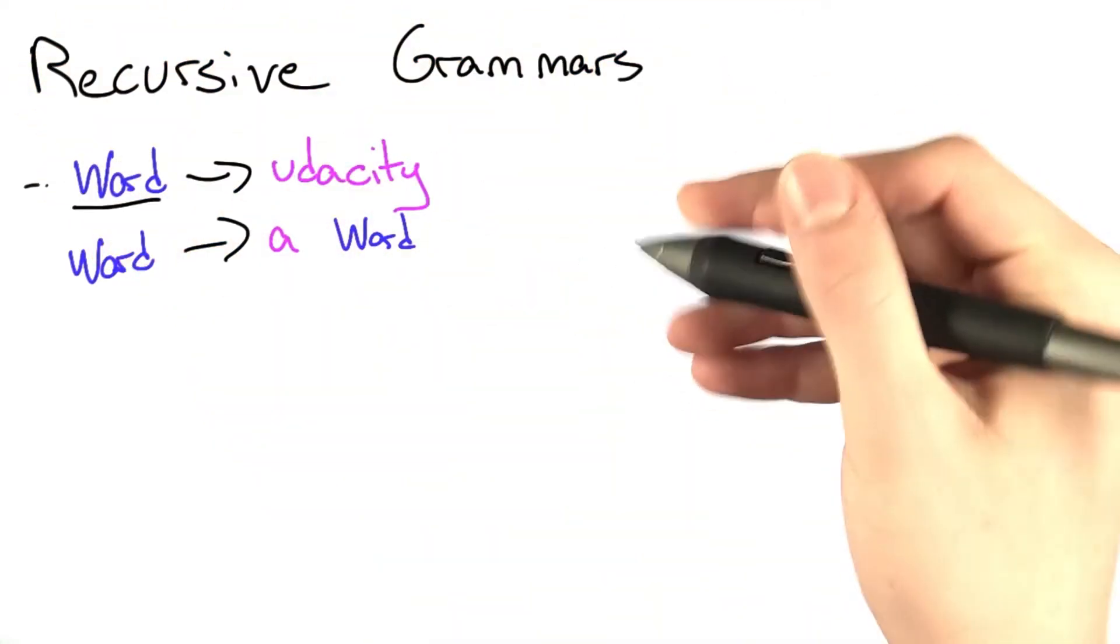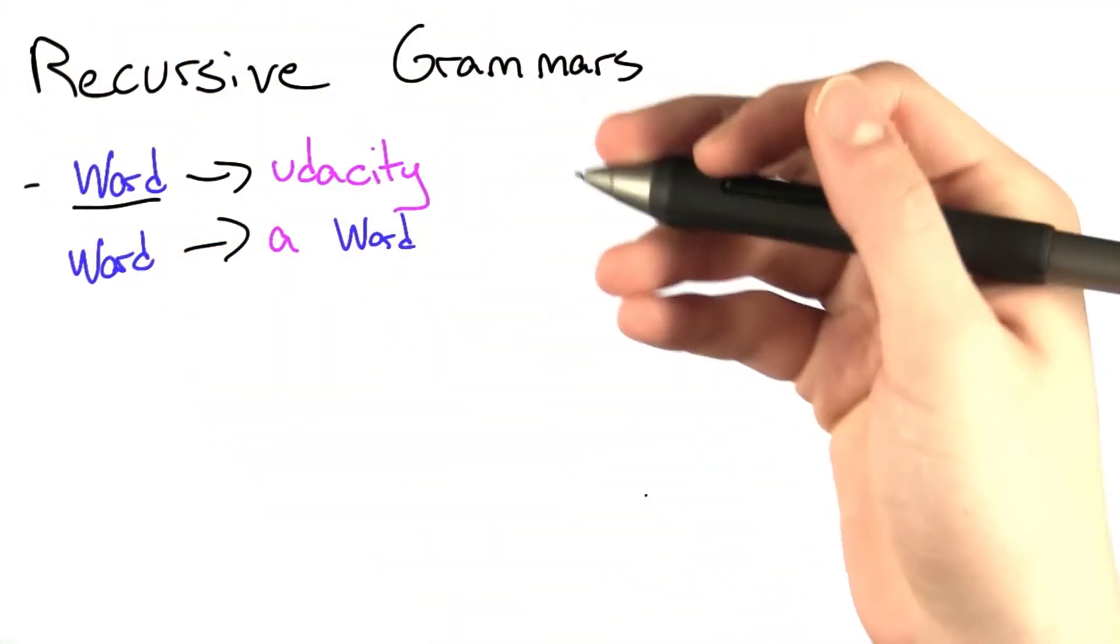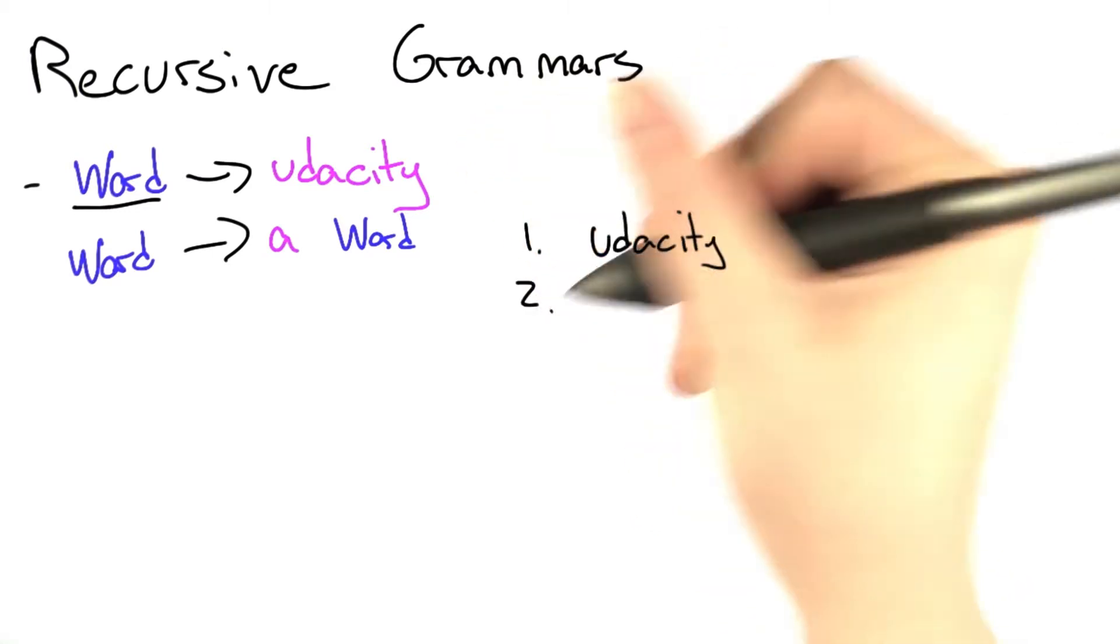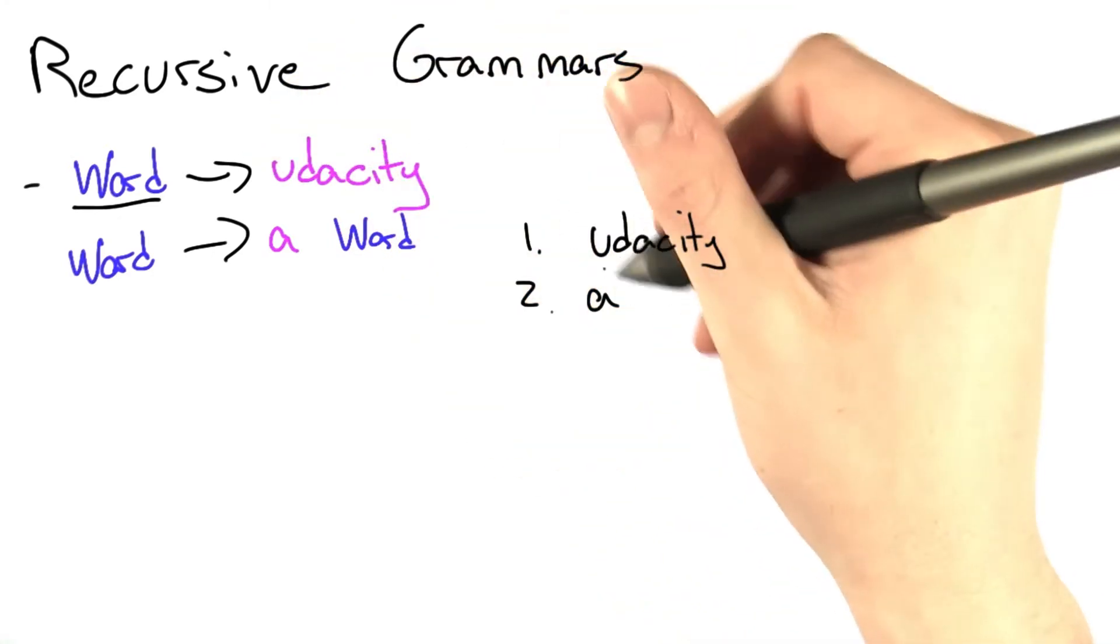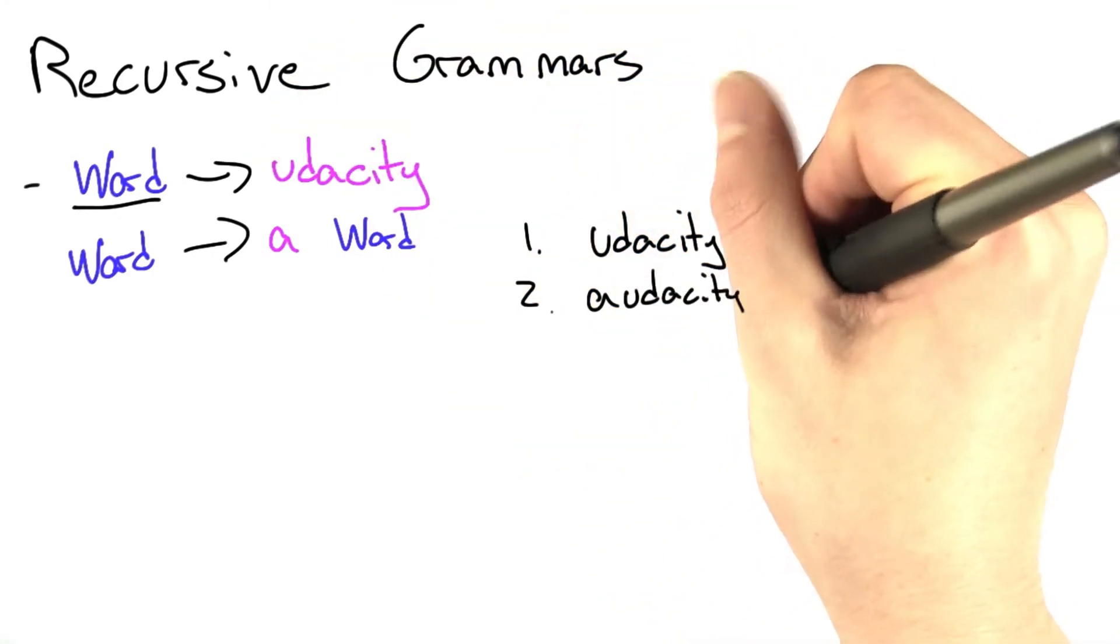If we start from the first one, then we end up with one possible word. If we start from the second word, then we get the letter A, and then we can insert another word. This can be Udacity, so then we end up with Audacity.